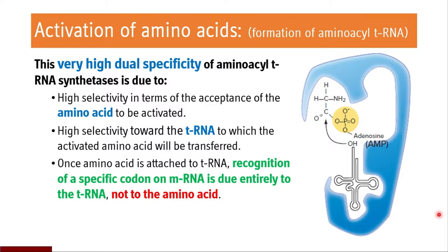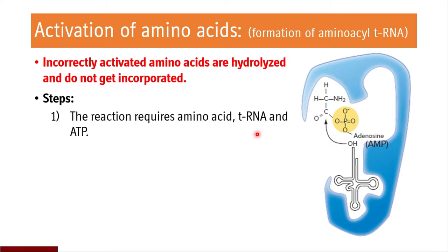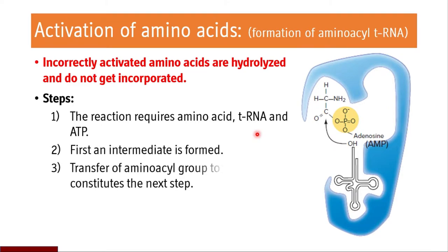Amino acids are attached to tRNA, and the recognition of the specific codon on mRNA is due entirely to the tRNA. The recognition part is only attributable to the tRNA and not the amino acid. Sometimes amino acids can be incorrectly activated, and those incorrectly activated amino acids cannot be incorporated into the given peptides — they will be hydrolyzed and not incorporated. This reaction requires amino acid, tRNA, and ATP.